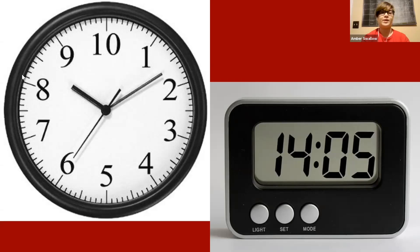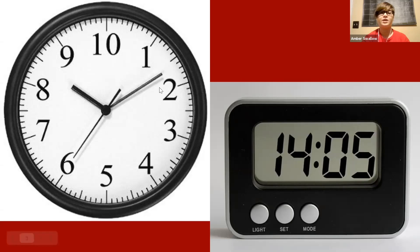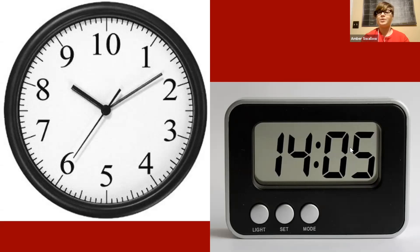With the analog clocks — our big circle clocks over here — it can be a little harder to read them. For one, this one doesn't go to 12, so this one's already wrong. But it has the little tick marks and each tick mark is five minutes. So it can be a little more complicated to read the analog clocks, which is why most people use digital clocks nowadays.